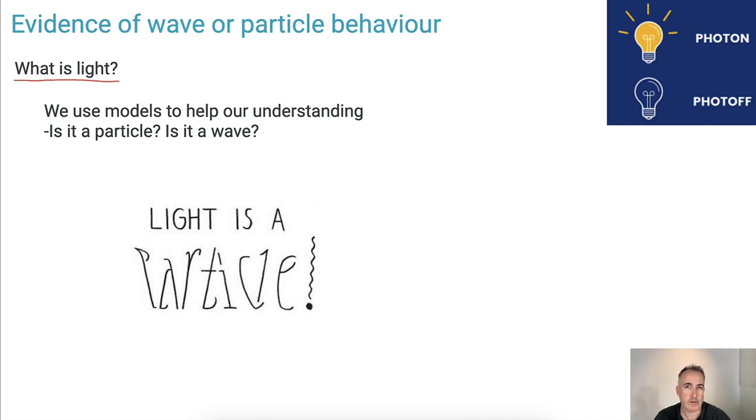Our own need for using models means that we often like to assign things that we already understand. So if we don't understand what light is, well, we do understand particles, or so we think. So we say, light might be a particle. And other people said, light might be a wave. So which is it? We're going to investigate this a little bit further.